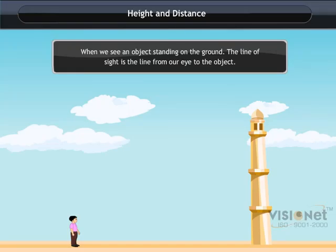Line of Sight. When we see an object standing on the ground, the line of sight is a line from our eye to the object that we see.